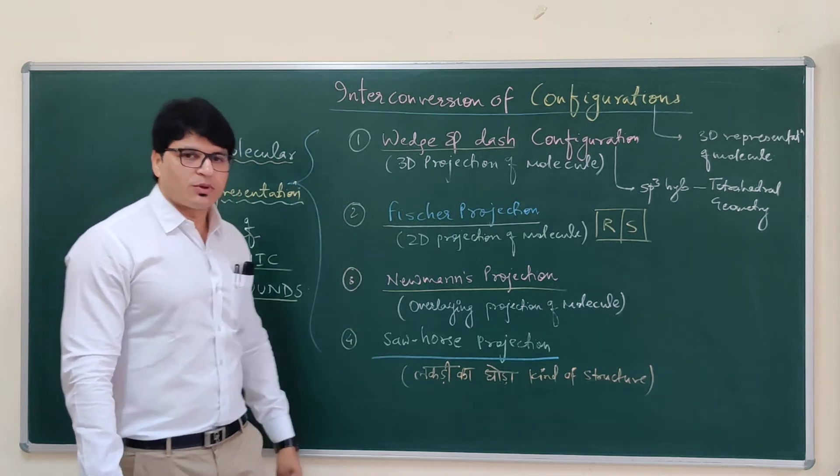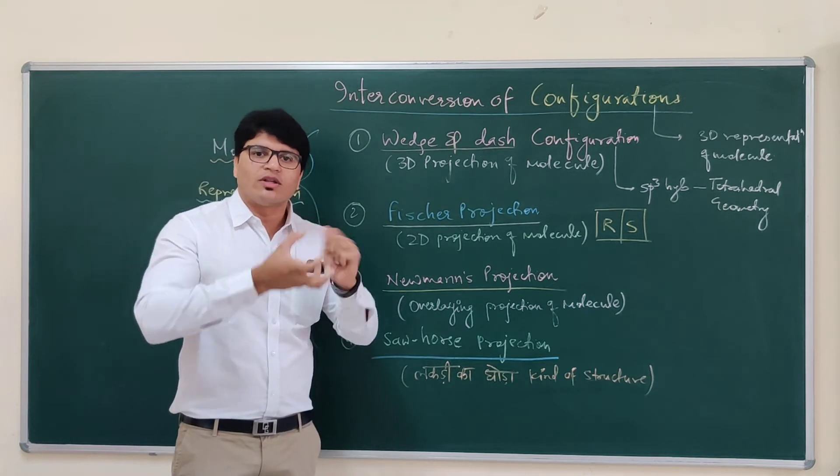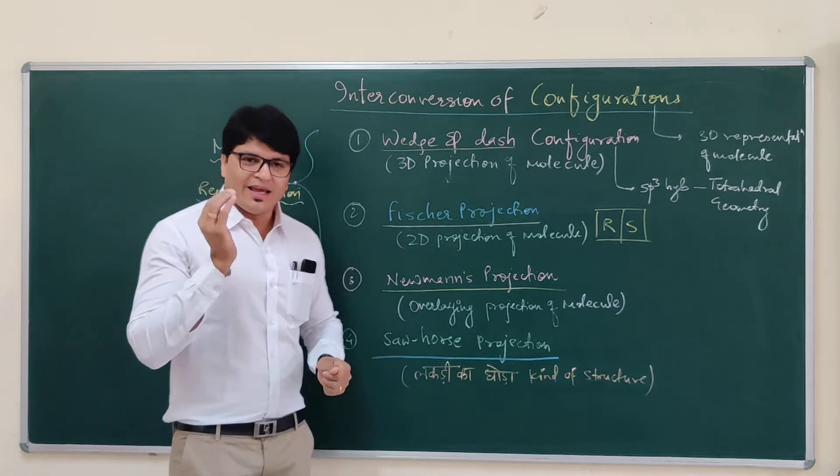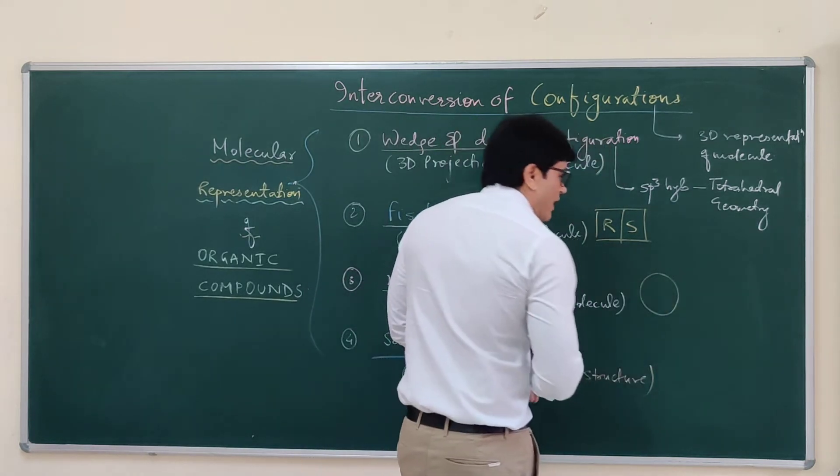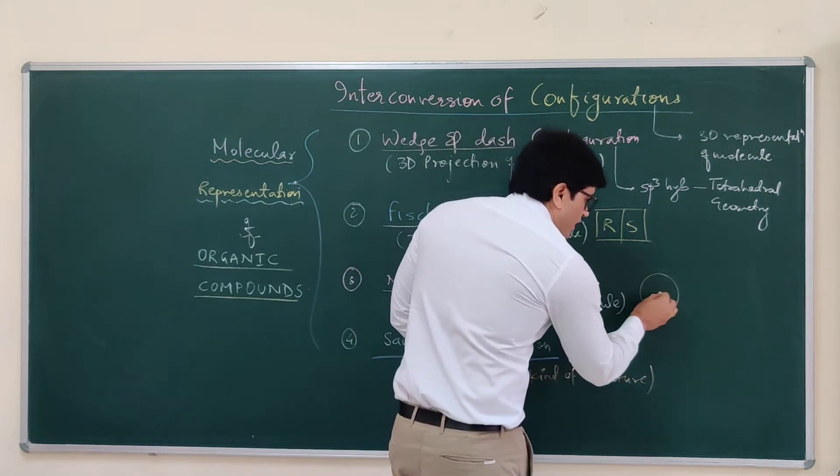The third one is Newman projection. When two carbons are overlying on each other. Overlying means one is behind the other as represented. This is the rear molecule. This is the front molecule.